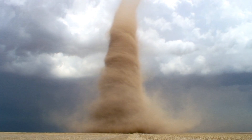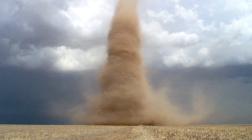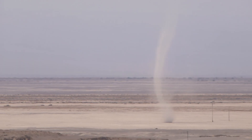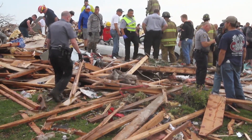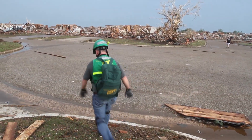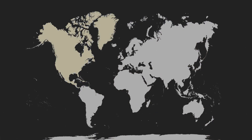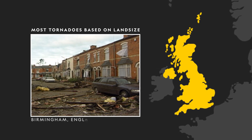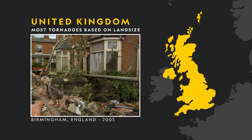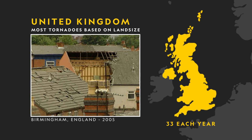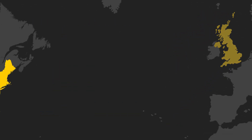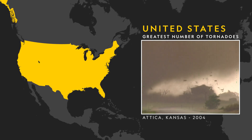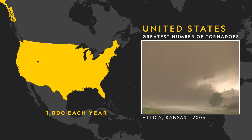Tornadoes are powerful spinning columns of air that stretch from the ground to the clouds. Most are relatively weak, but the few that grow into large events are extremely violent and cause immense destruction. Tornadoes occur on six of the seven continents. The country with the most tornadoes based on land size is the United Kingdom, with an average of about 33 tornadoes reported each year. But the country with the greatest overall number of tornadoes, and the most intense, is the United States, with over 1,000 reported annually.